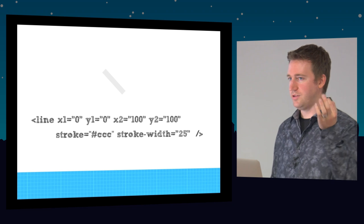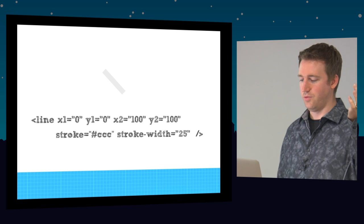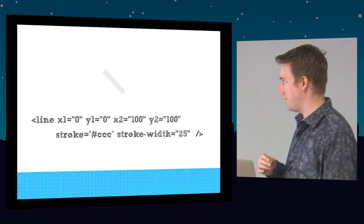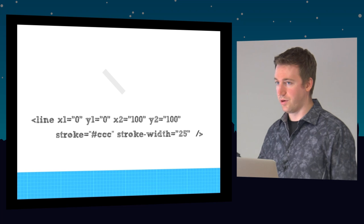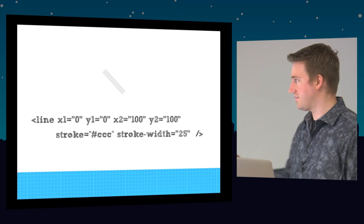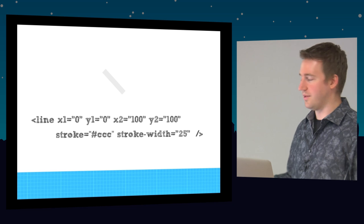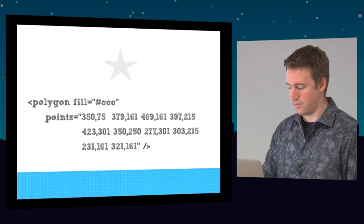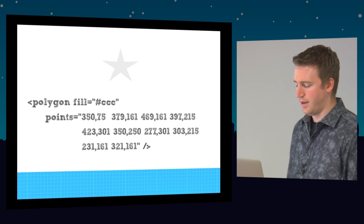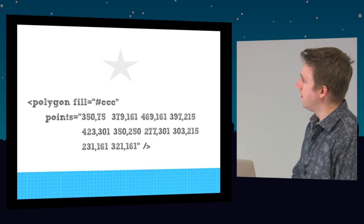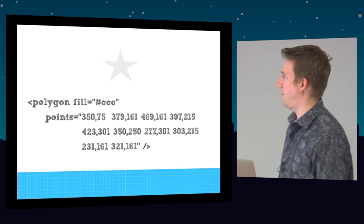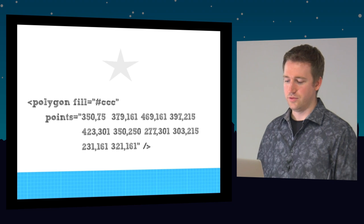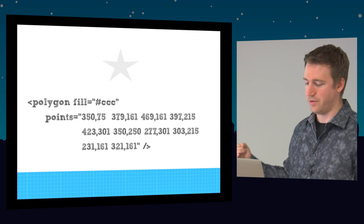The line element — you specify two x, y pairs and draw a line. Here I'm showing two new properties: stroke (the stroke color) and stroke-width. In this case the width of the line is 25 pixels. With the polygon, you specify x,y pairs separated by spaces and commas between the pairs — starting at 350x, 75y and drawing the whole shape.